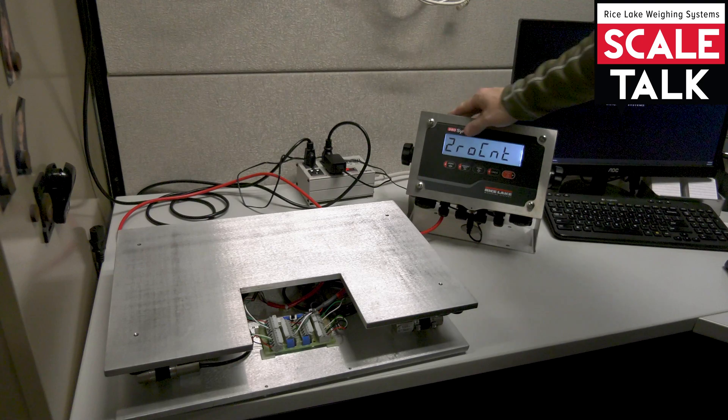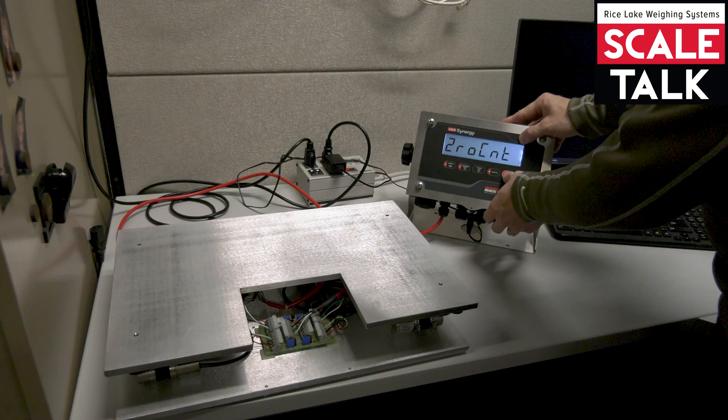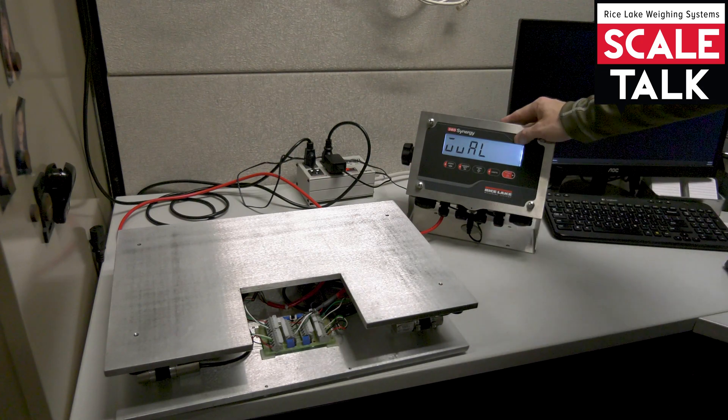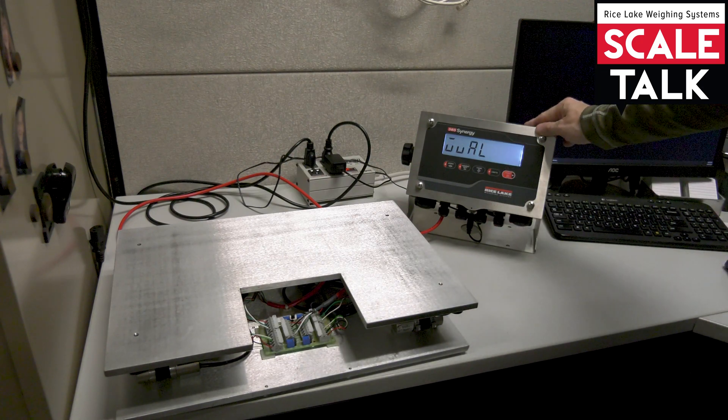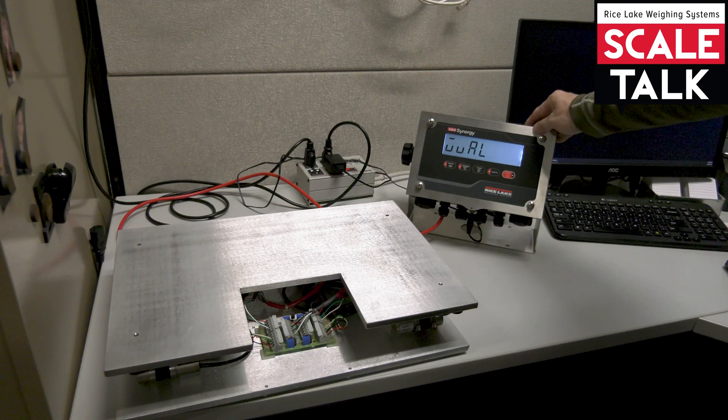At this point I have an option of reviewing the zero counts that it just captured. I won't do that now. I'll go to the right and I see the W valve. This is where we're going to enter the weight value that will be used for calibration.